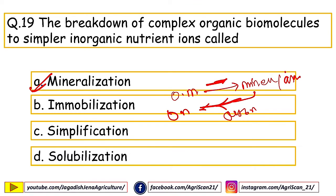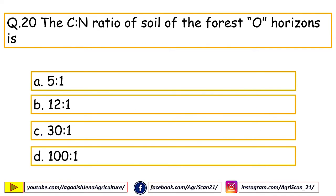Next question: the C:N ratio of soil of forest O horizon is — options are 5:1, 12:1, 30:1, 100:1. The right answer is 30:1. The O horizon is the organic horizon; in forests, leaf litter falls and deposits organic matter there. Since organic matter in the O horizon is not fully decomposed and remains fresh, the C:N ratio is very high — around 30:1.